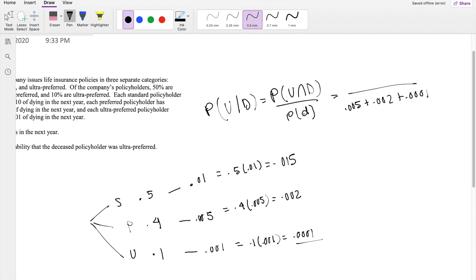And the probability that they are dead and are ultra-preferred is this probability here, 0.0001. So this is equal to 0.0001 divided by 0.0071.